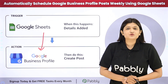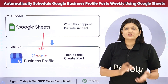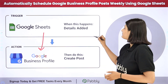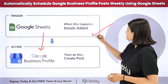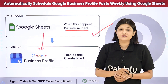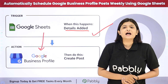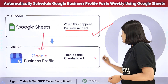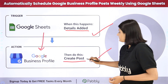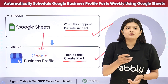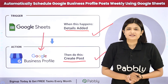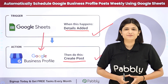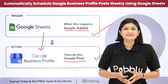Pabbly Connect runs on two principles: Trigger and Action. As my Trigger application, I will take Google Sheets where the post details are added. And then in my Action application, I will take Google Business Profile where posts will be automatically published on a weekly basis. If you want to learn this amazing automation step by step, let me take you to my screen.